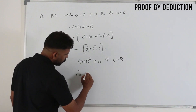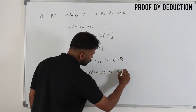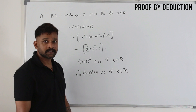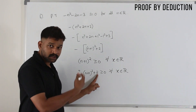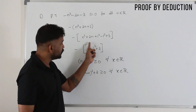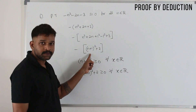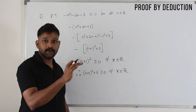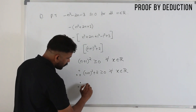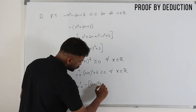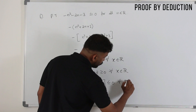Therefore, n plus 1 whole square plus 2 is greater than or equal to 0 for all x belonging to R, because this is already positive and you are adding another positive number, so the whole thing is always positive. If you multiply by a negative sign, this will become a negative number always. So you can write: minus of n plus 1 whole square plus 2 is less than or equal to 0 for all n belonging to R.